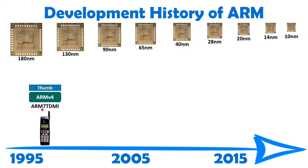With the ARM7 processor, the instruction set was ARMv4. In ARM7 there were two types of instructions: ARM state instructions and Thumb state instructions. ARMv4 has ARM state instructions of 32-bit size and Thumb state instructions of 16-bit size. Thumb state instructions were used for lower-category applications, while 32-bit ARM state instructions are used for high-end applications. Earlier black-and-white Nokia mobile phones had the ARM7 processor.